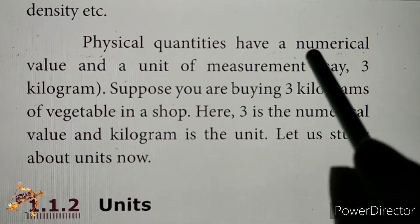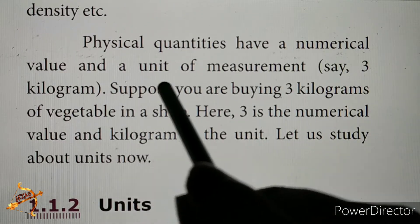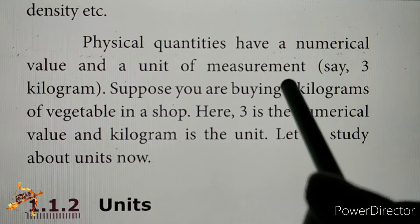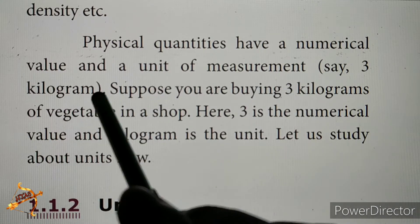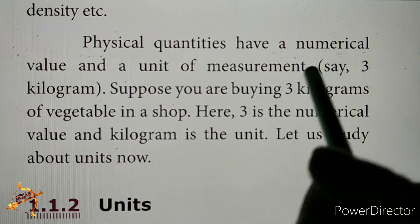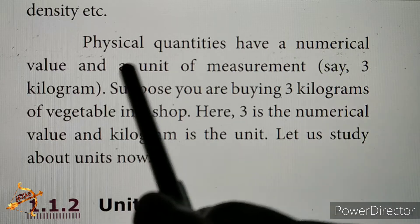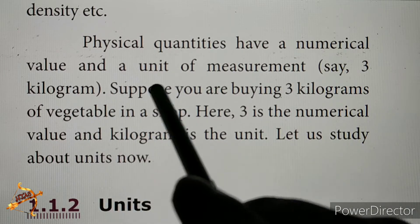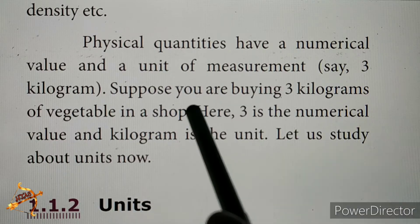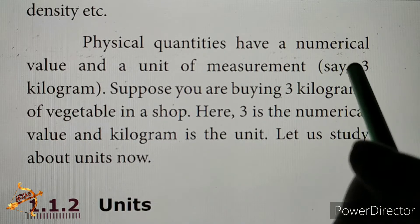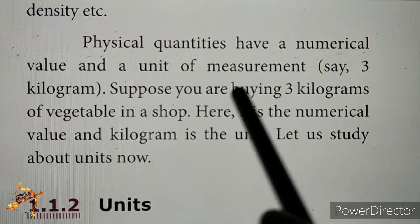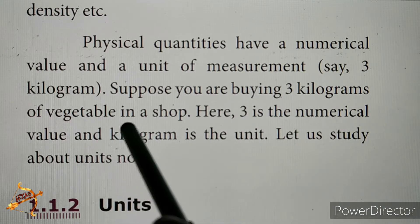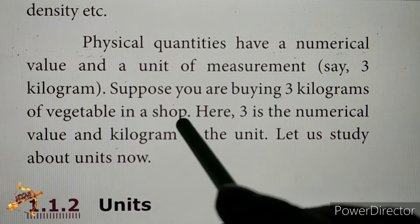Physical quantities have a numerical value and a unit of measurement. For example, 3 kg — the numerical value is 3 and kilogram is the unit of measurement. Suppose you are buying 3 kilograms of vegetables in a shop.